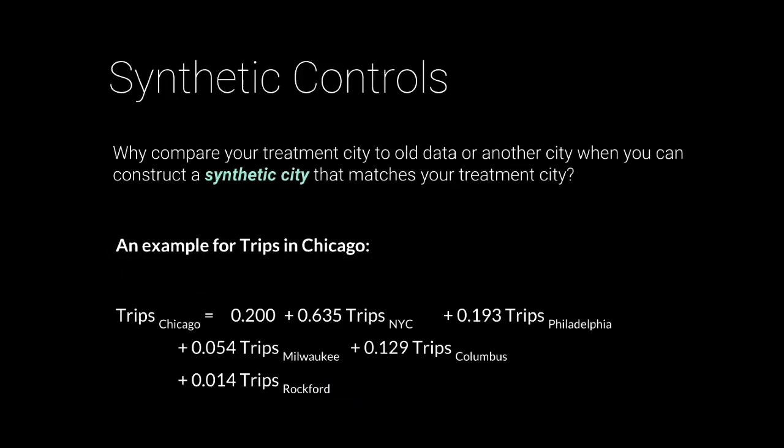The crux of synthetic control is: you're going to make a change to a treatment city. You construct a synthetic city using machine learning, make the change in the real city, hold the synthetic city as it is, and then do a causal inference-based impact assessment. In this example, we were launching a change in Chicago, and we modeled Chicago using a weighted average of other cities in the same neighborhood — New York plays a big role, Philadelphia plays a role, and we also added a dash of Milwaukee and Rockford to construct a synthetic Chicago. Then we launched the change in Chicago and measured the actual result.